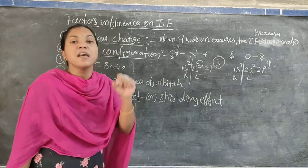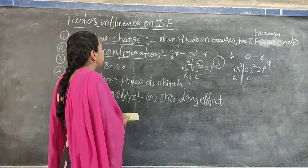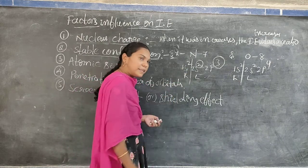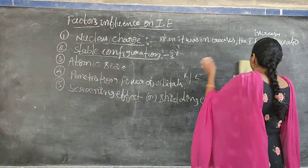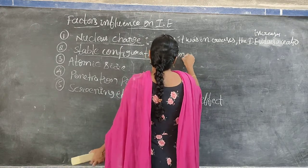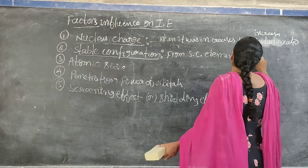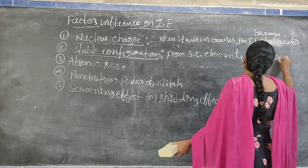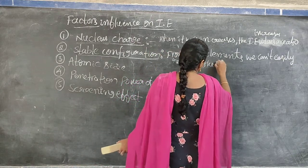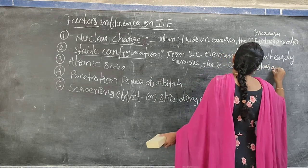From stable configuration elements, we cannot easily remove the electrons. We require more and more energy for removing electrons from stable configuration elements. Therefore, if stable electronic configuration increases, the ionization energy values also increase.